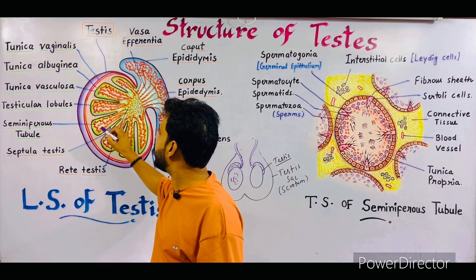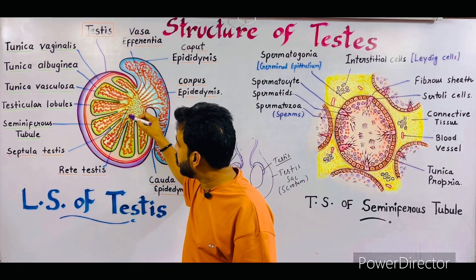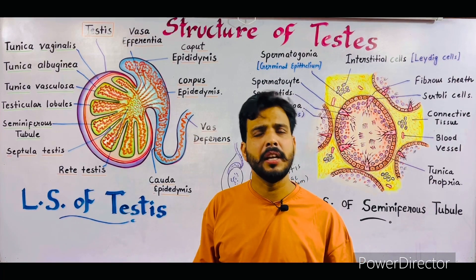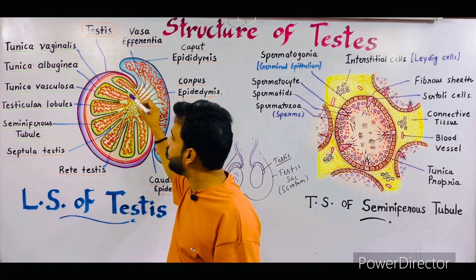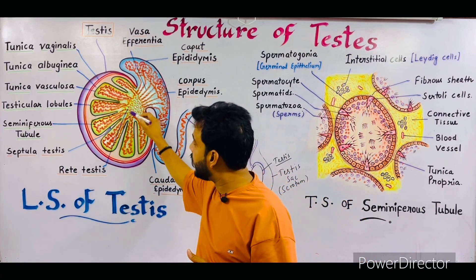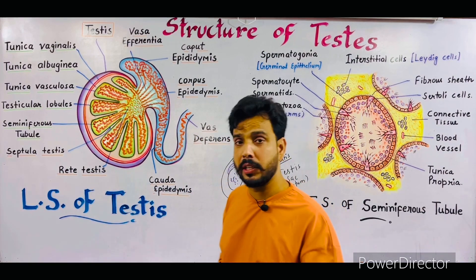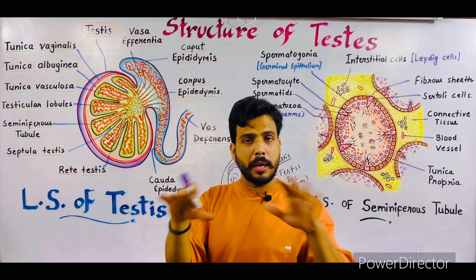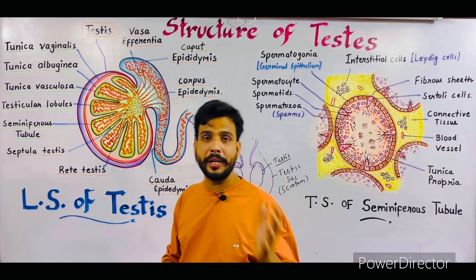When these seminiferous tubules emerge out from the testicular lobules, they become straight, and these straight tubes are simply called straight tubules. After that, all the straight tubules of all 250 chambers mix together to form a dense network. This dense network of seminiferous tubules is termed as the rete testis — another important question asked in the NEET examination especially. So this area is called rete testis, in which seminiferous tubules mix together to form a dense network.